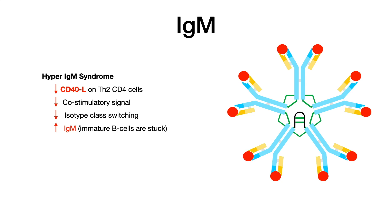In hyper-IgM syndrome, as the name implies, you have too much IgM. On USMLE or COMLEX, you'll also see decreased levels of IgG, IgA, and IgE. Because of that, you have increased infections that would otherwise be combated by those differentiated isotypes — specifically increased Pneumocystis infections, increased Crypto infections, and increased CMV infections.